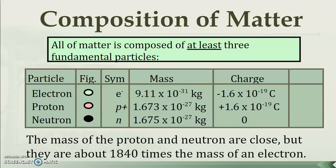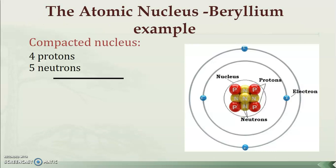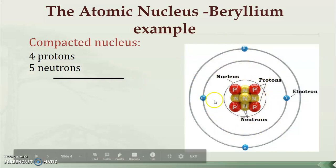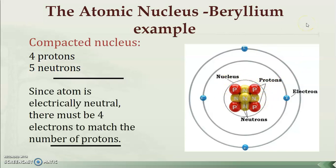The proton and neutron have basically the same mass, but they are almost 2,000 times bigger than the electron, so the majority of the mass of an atom is focused in its nucleus — that's what we're focused on today: nuclear physics. This is a beryllium atom as an example. In the nucleus you have four protons and five neutrons, and the electrons are out on the outer shell.